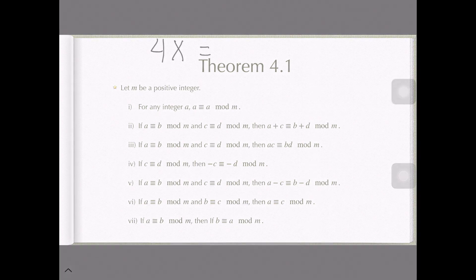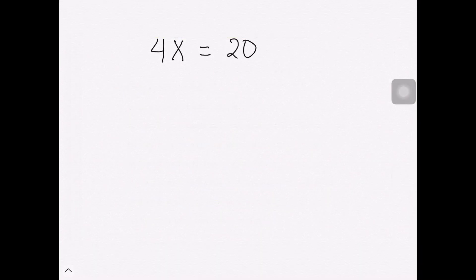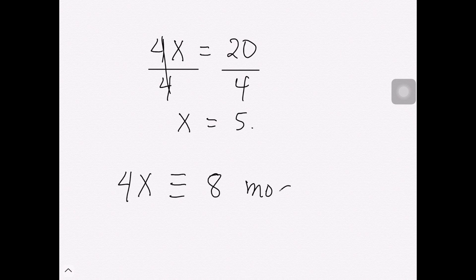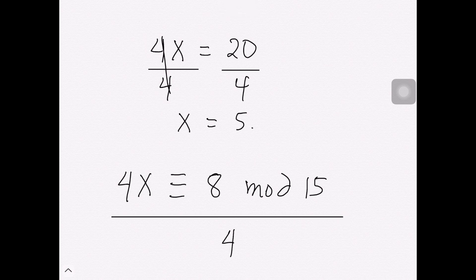Considering the equation 4x equals 20, if we want to solve for x, we just divide both sides by 4 and get x equals 5. Now, since we have similar properties in equality and congruence, one might ask: if we have the congruence 4x ≡ 8 (mod 15), can we also just divide here?